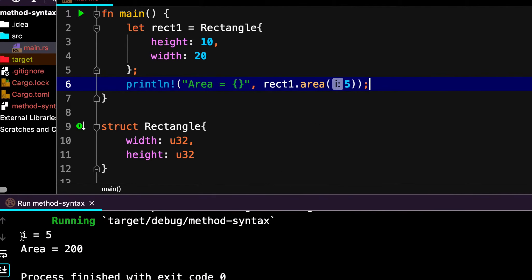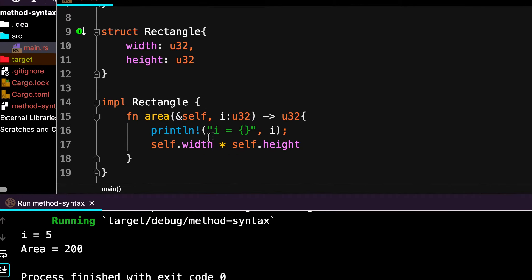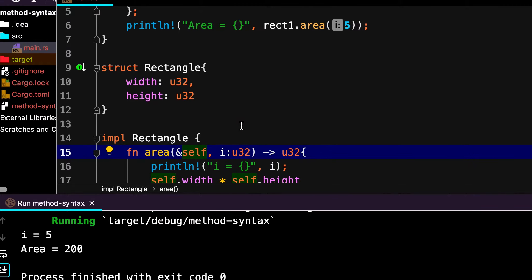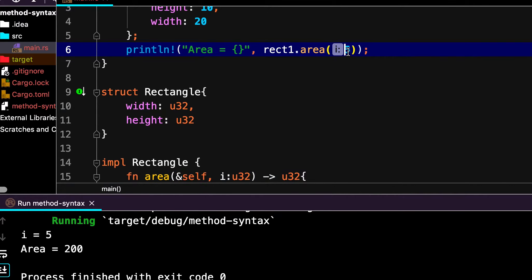And here we need to pass just this dummy value, that is 5. And let's run it again. So you see that this i equal to 5 is printed from this method.